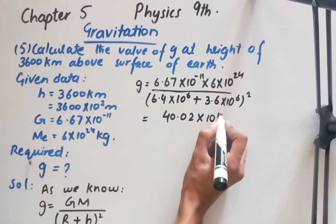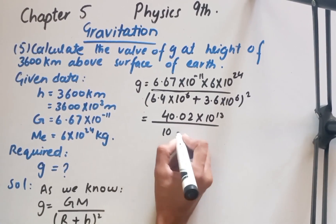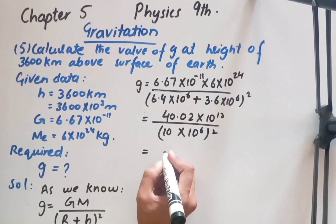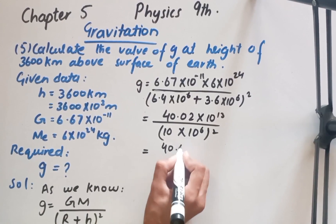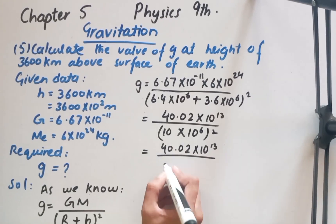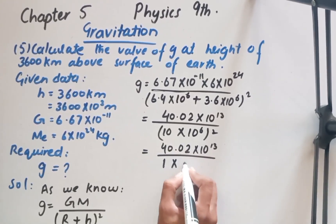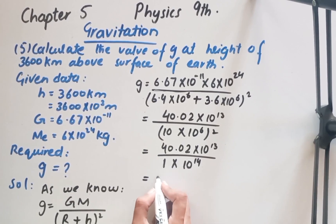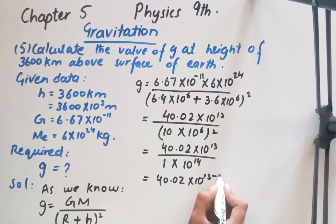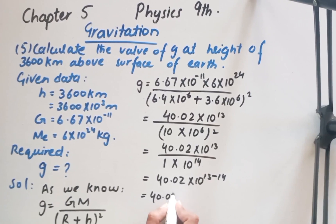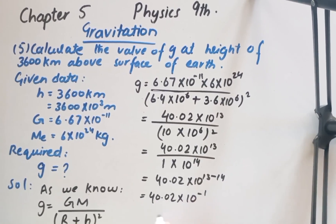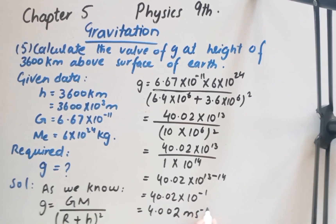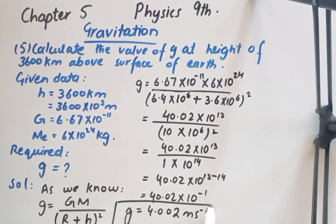6.67 × 6 equals 40.02 × 10¹³. The addition of 6.4 + 3.6 is 10, with the common power being 10⁶, so the denominator is (10 × 10⁶)² = 10² × 10¹² = 1 × 10¹⁴. This gives 40.02 × 10¹³ over 10¹⁴, and since 13 − 14 = −1, the result is approximately 4.0 m/s².